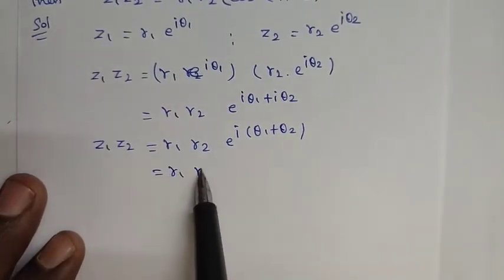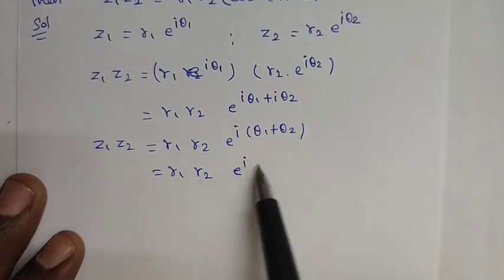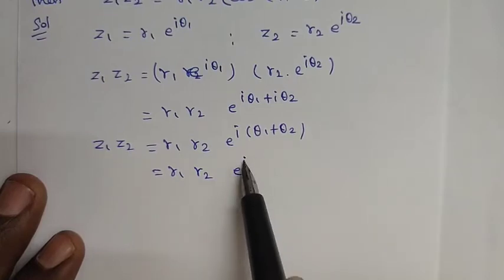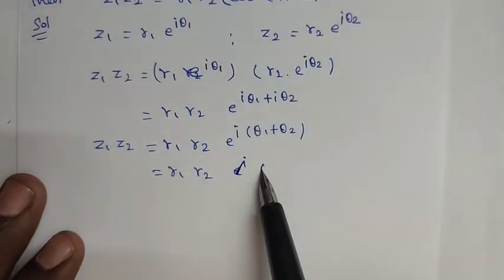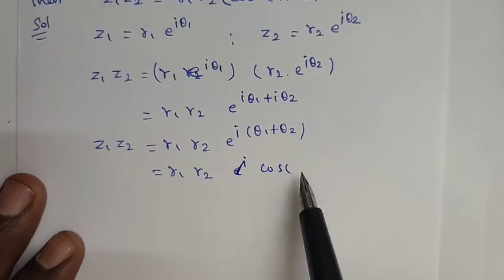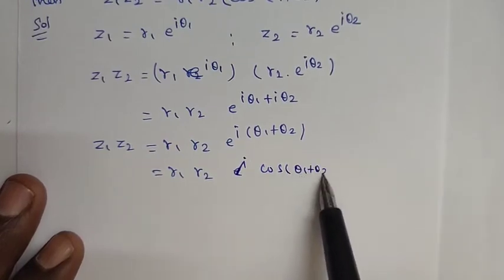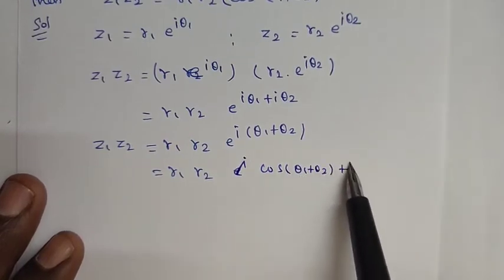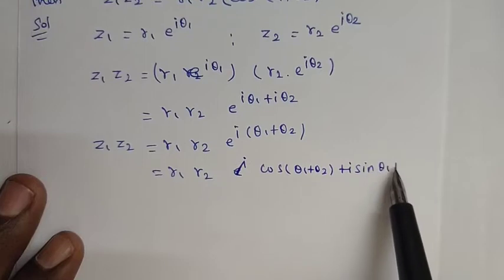So z1 z2 equals r1 r2 into e to the power of i(θ1 plus θ2), converting to trigonometric form: r1 r2 into cos(θ1 plus θ2) plus i sin(θ1 plus θ2).